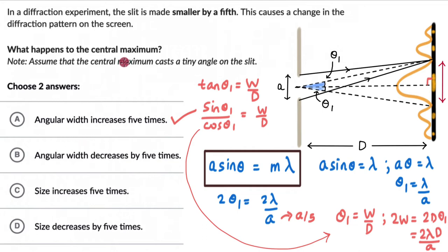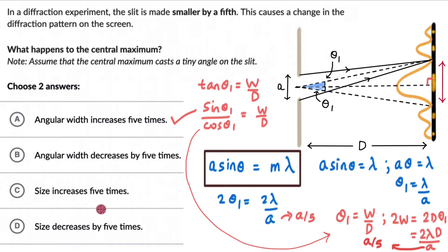Now again, when the slit is made smaller by a fifth, the new A becomes A/5. The 5 goes to the numerator and the size becomes 10λD/A — so the size also increases by 5 times.